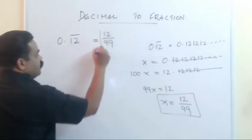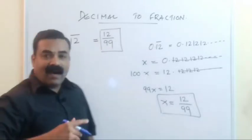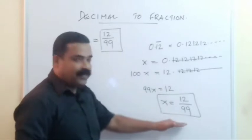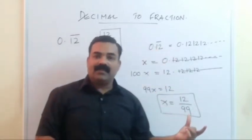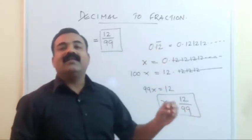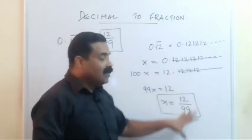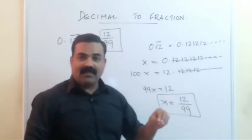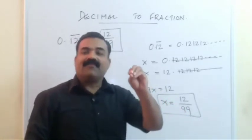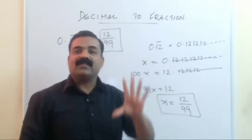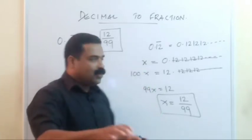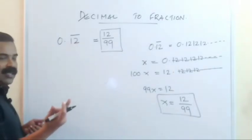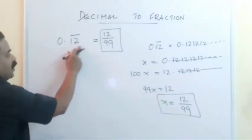We learned this method in school, but if you follow this method in competitive exams you will lose a lot of time — the answer is correct but it's too slow. So what is the shortcut method where you can find the answer within 5 to 10 seconds? You just see how many digits are repeating — two digits are repeating — so you get denominator 99.